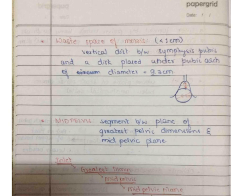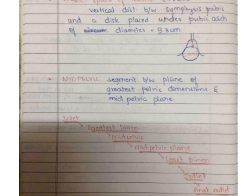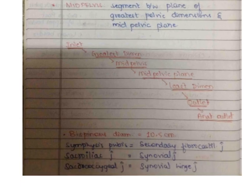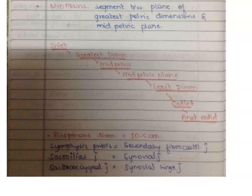The mid pelvis is the plane lying between the plane of greatest pelvic dimensions above and the mid-pelvic plane below. The layered sequence from top to bottom is: inlet, plane of greatest pelvic dimension, mid pelvis, mid-pelvic plane, plane of least pelvic dimension, outlet, and finally the anatomical outlet. The bispinal diameter is 10.5 cm and the bituberous diameter is 10 cm.